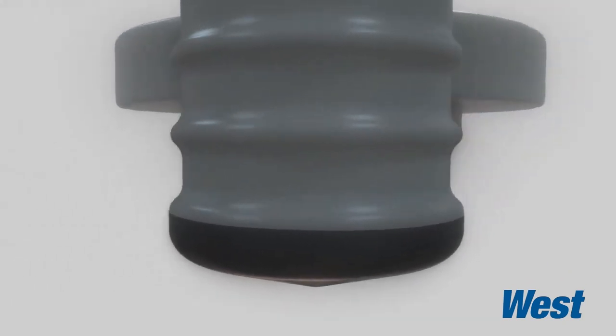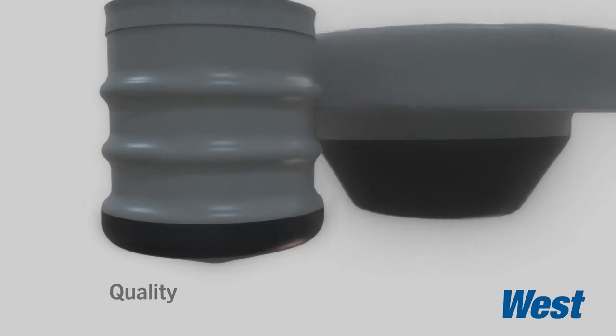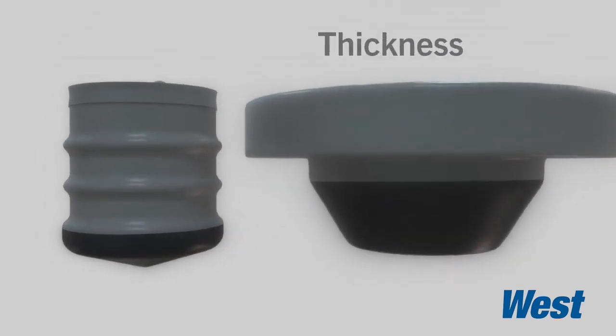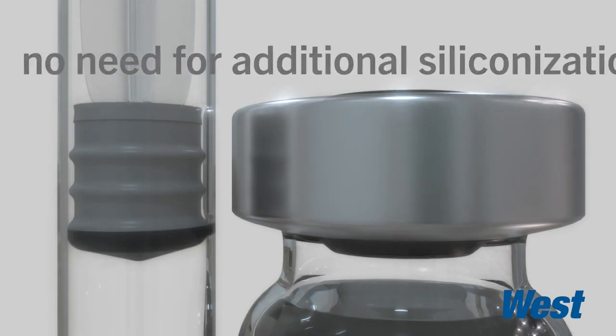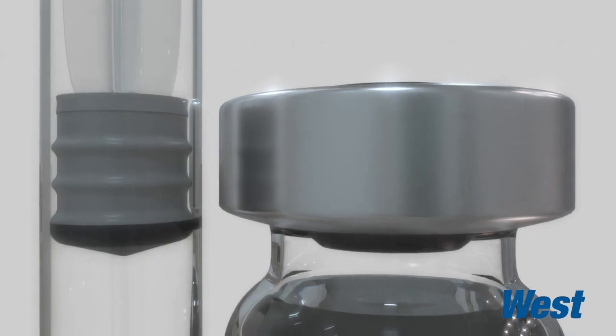The effectiveness of the fluorotec barrier depends on the quality and thickness of the film. A consistent film coverage at the elastomer contact surface eliminates the need for additional siliconization or sprayed-on coatings.